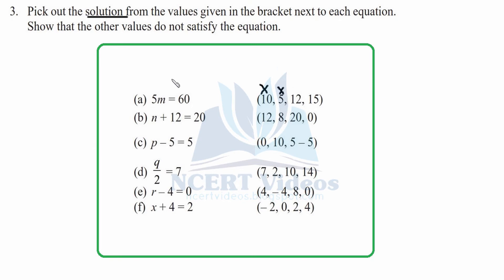Placing m equal to 12: 12 fives are 60, so it is satisfied. We don't even have to check further because there is only one solution. Checking m equal to 15 for confirmation: 5 times 15 is 75, which does not equal 60. For part b, n plus 12 equal to 20: placing 12 gives 24, which doesn't follow. Placing 8: 12 plus 8 is 20 — this satisfies the equation.